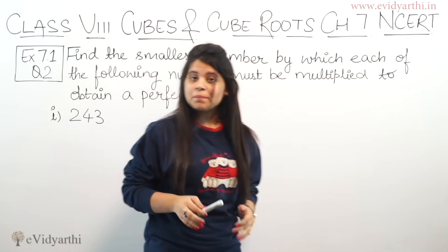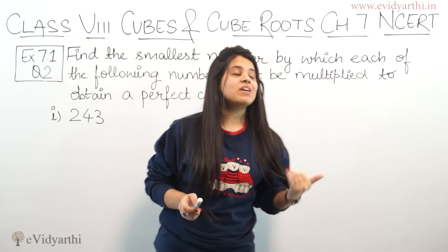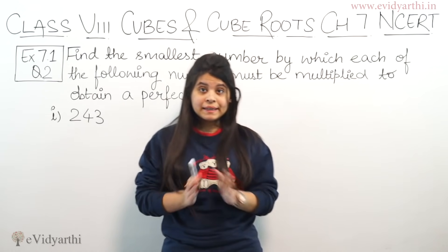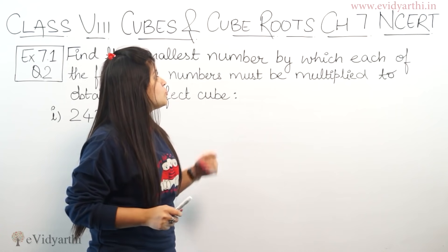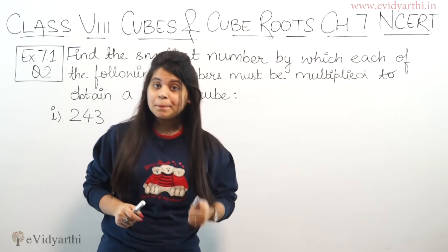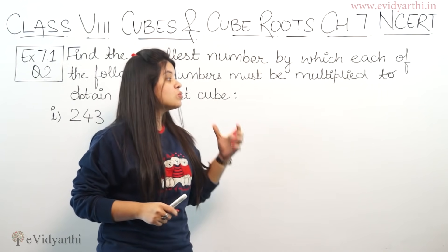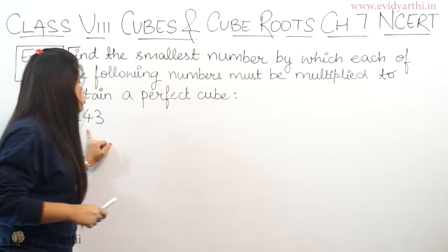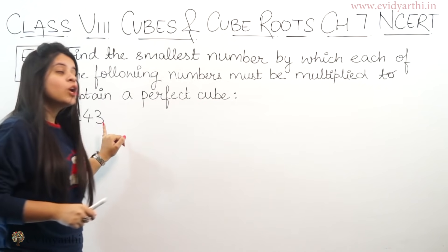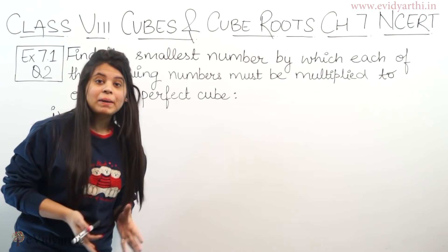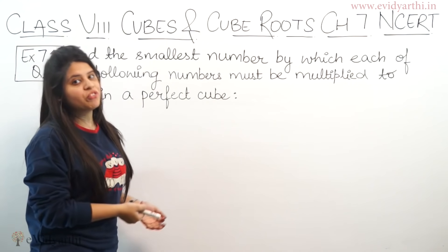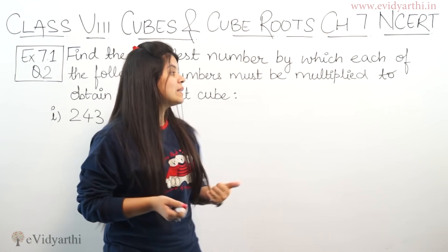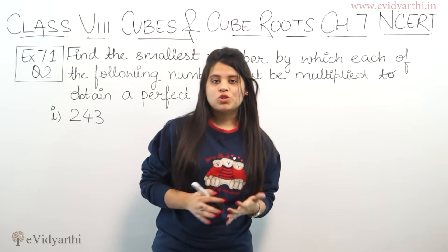Now, if you have some numbers given, it is very clear that these are not perfect cubes. So you have to find a number — for example, if we have the number 243, we need to find what to multiply it by to make it a perfect cube.